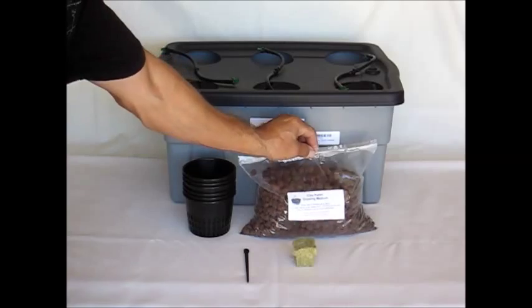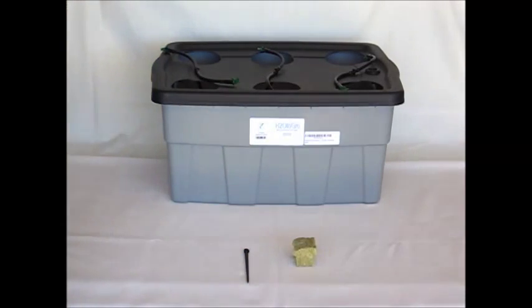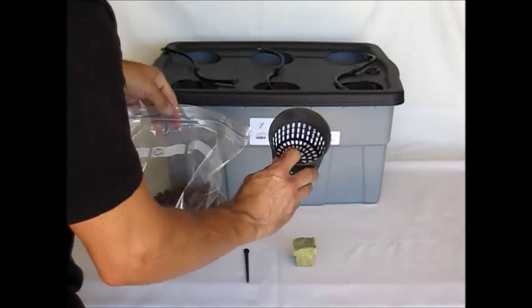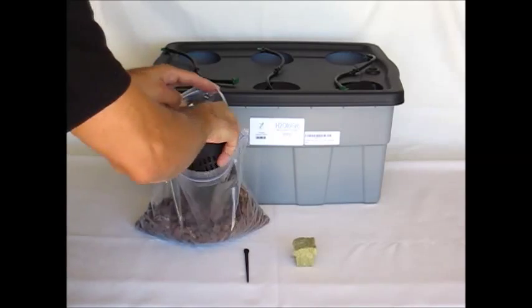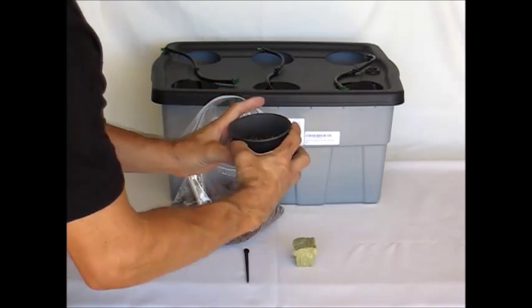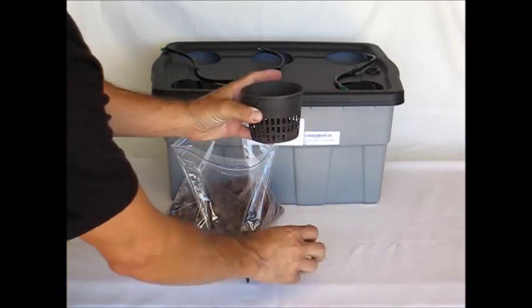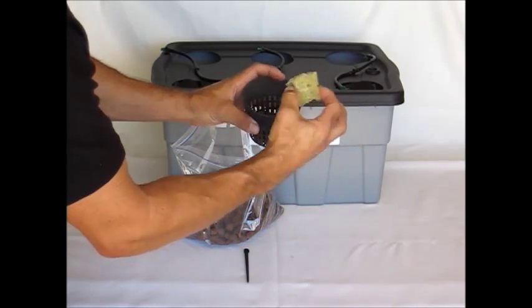So once you have that, we're going to go ahead and set aside something we already have ready. From there you're going to take your net cup, put in just enough of your clay pebbles. Basically one layer down on the bottom here. Next is your cube.